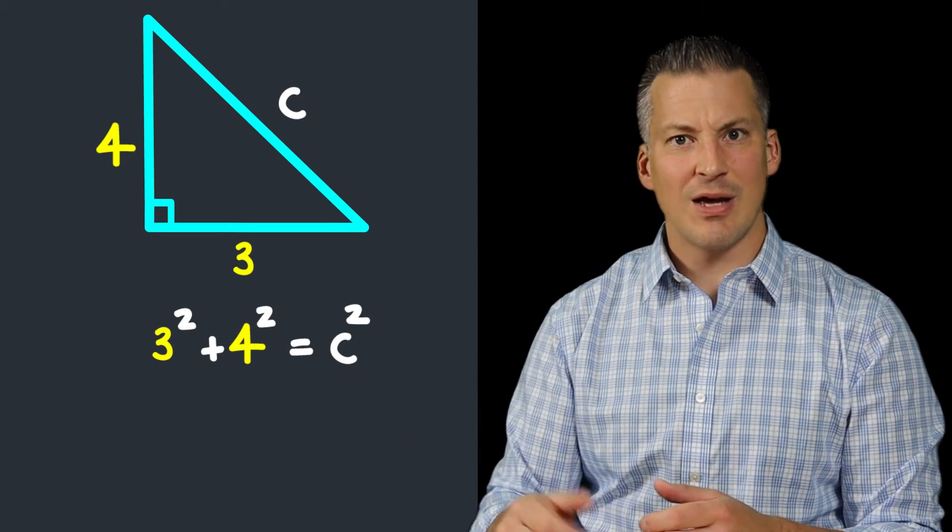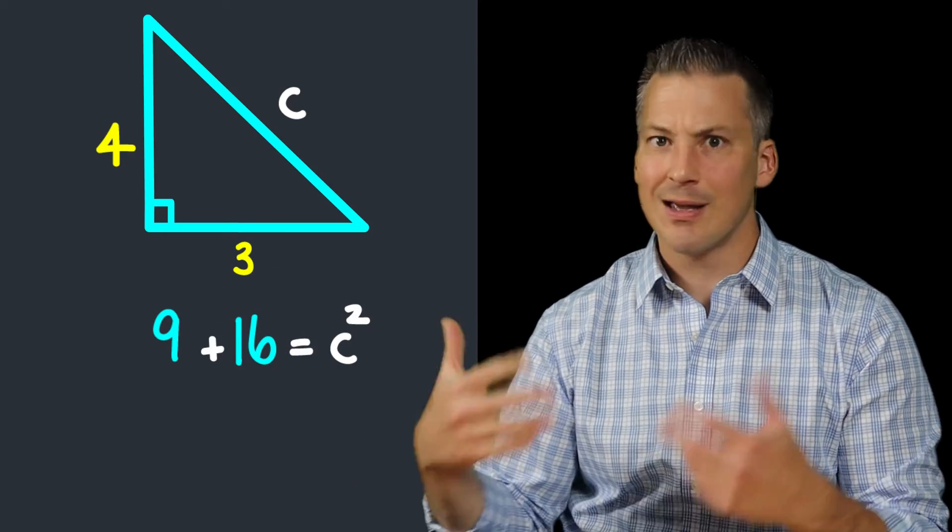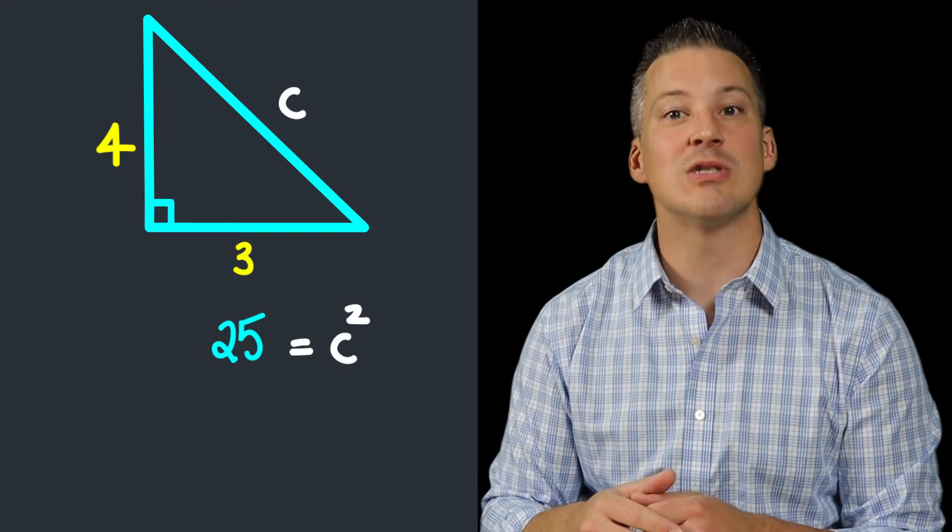So when we do that math out, we square the 3, that's a 9, we square the 4, that's a 16, and that's going to equal c². We add those two together, it's 25. 25 is equal to c².